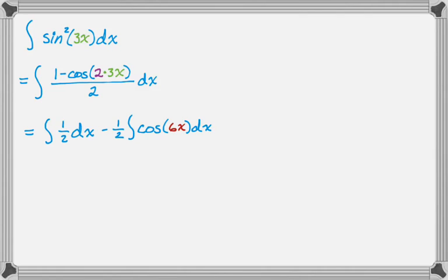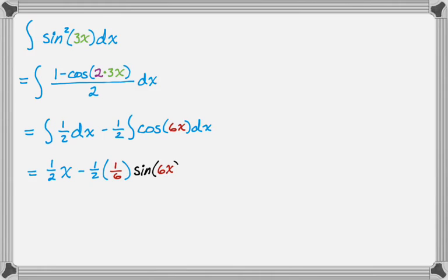You don't really want to show the u-substitution every single time. The integral of (1/2) dx is just (1/2)x. Then for the cosine term, keeping the negative one-half, we get a factor of 1/6, and the integral of cosine is sine, giving sine(6x). So the result is (1/2)x − (1/12)·sin(6x) + C. That's a basic example of how these things work.